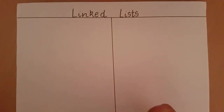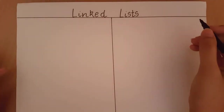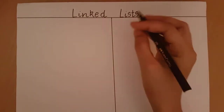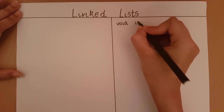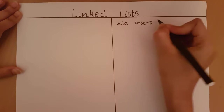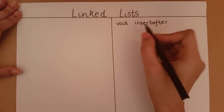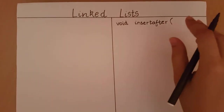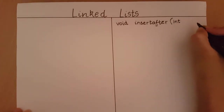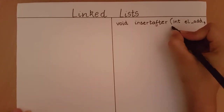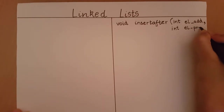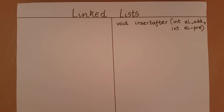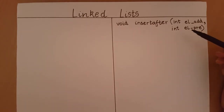I will write an example on one side and give the program on the other. Let's start by defining the function. It's an insert operation, so I don't need to return anything. I'm calling my function insert_after. It takes two input parameters: the element I want to add, called el_add, and the element which is pre-existing in the list, called el_pre.